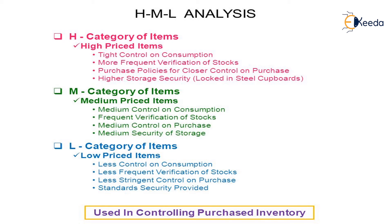Low priced items, the L category, require less control on consumption, less frequent verification of stocks, less stringent control on purchase, and only standard levels of security.